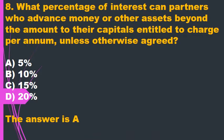Question 8. What percentage of interest can partners who advance money or other assets beyond the amount of their capitals be entitled to charge per annum, unless otherwise agreed? A. 5%. B. 10%. C. 15%. D. 20%. The answer is A.